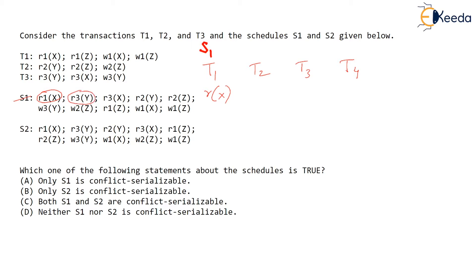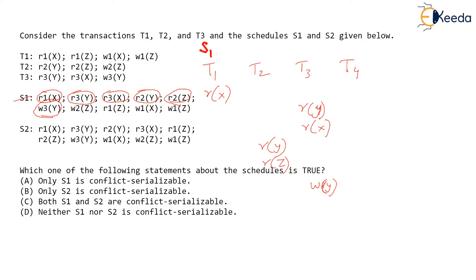The second operation is R3Y, so I write RY under T3. Then R3X, so RX under T3. Then R2Y, so RY under T2. Then R2Z, so RZ under T2. After that W3Y, so back to T3 we have WY. Then W2Z, so in transaction T2 it is WZ.